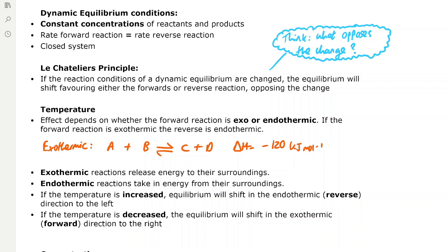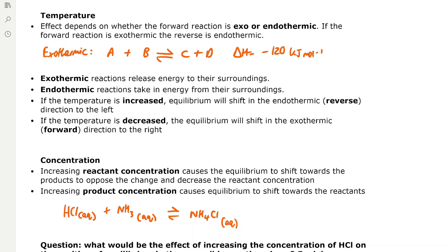Le Chatelier's principle says that if the reaction conditions of a dynamic equilibrium are changed, the equilibrium will shift to favour either the forward or the reverse reaction in order to oppose the change. When thinking about the effects of changing conditions on Le Chatelier's principle and the position of equilibrium, you need to think: what opposes the change?